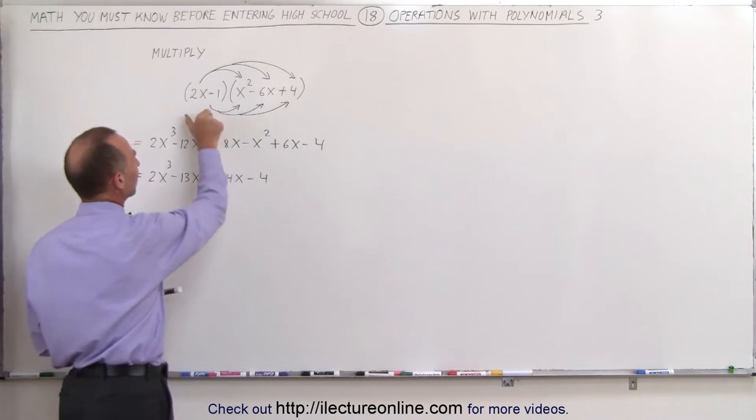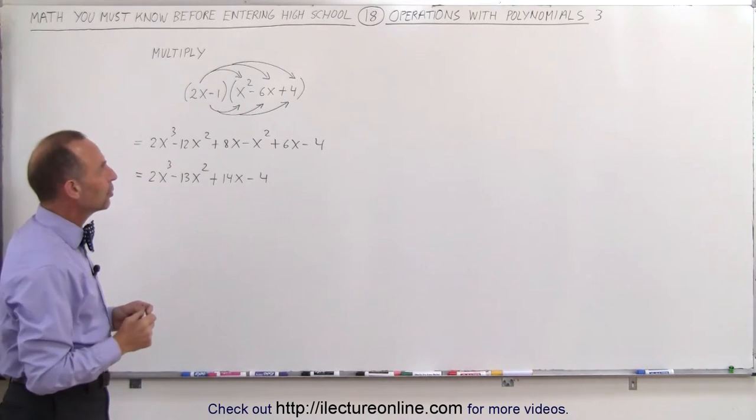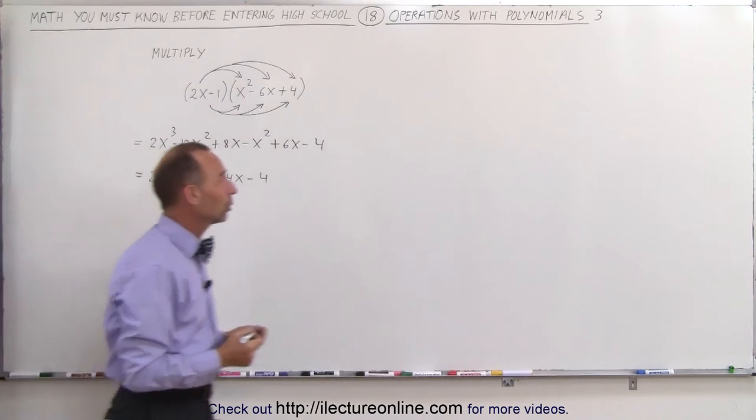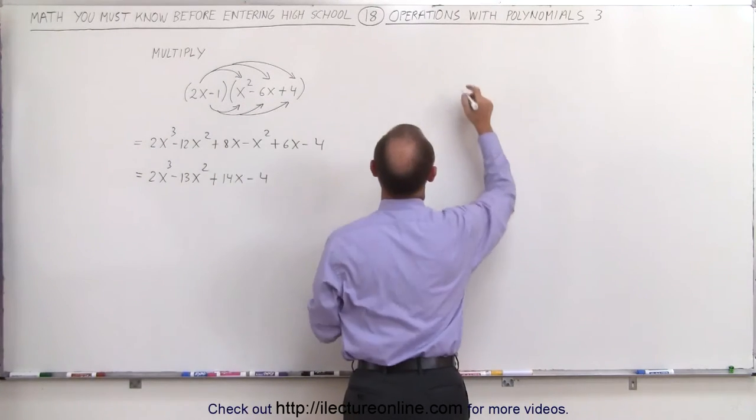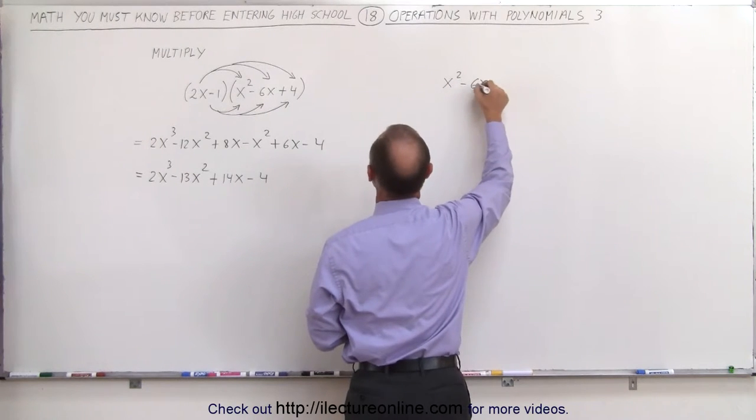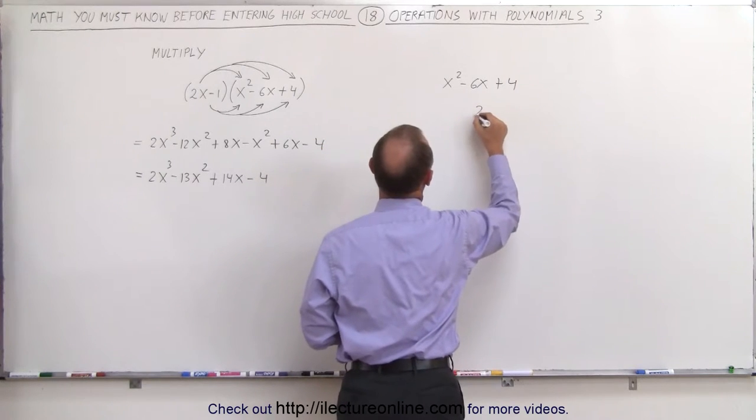So this is the result you get when you multiply this binomial with this trinomial. But there's another way we can do that. We can do what we call longhand multiplication. In other words, we write the trinomial up here: x squared minus 6x plus 4, and then we write the 2x minus 1 down here.